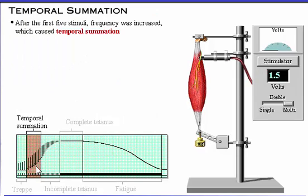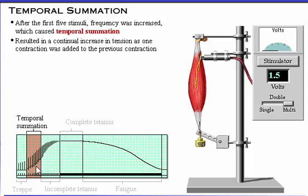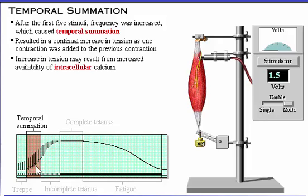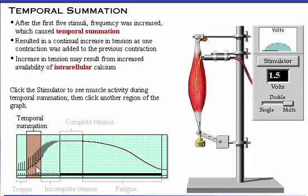After the first five stimuli, the frequency was increased, which caused temporal summation. Notice that this resulted in a continual increase in tension as one contraction was added to the previous contraction. The increase in tension may result from increased availability of intracellular calcium. Click the stimulator to see muscle activity during temporal summation, then click another region of the graph.